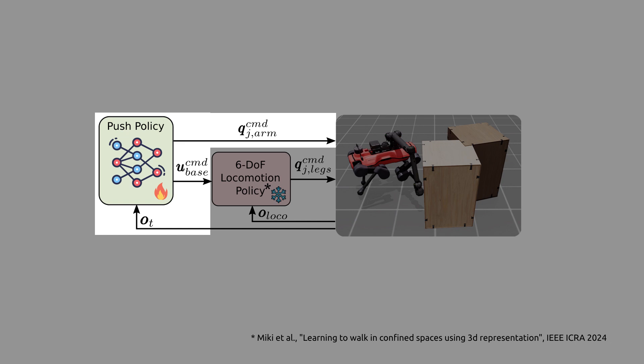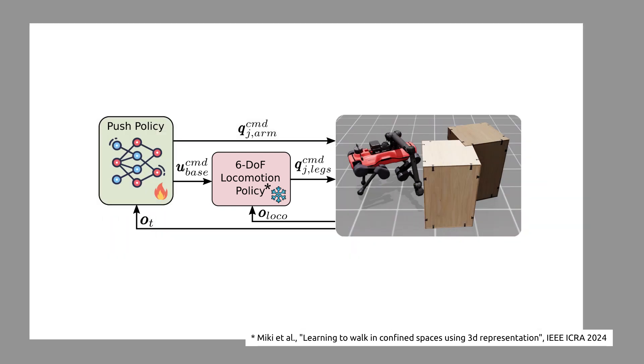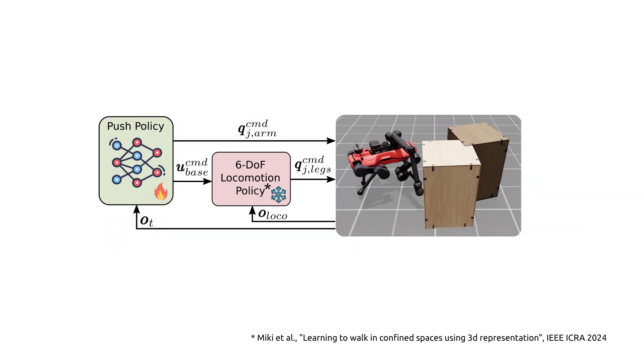The base commands are sent to a locomotion controller that generates leg joint commands. In simulation, the locomotion controller is included as a frozen pre-trained network.